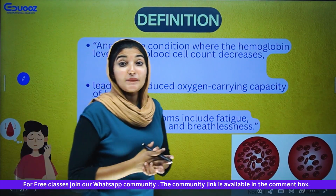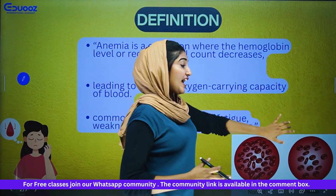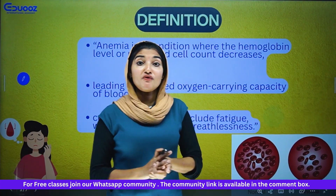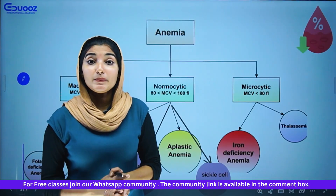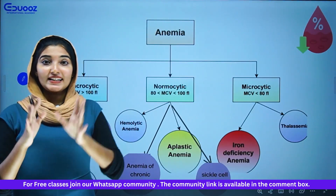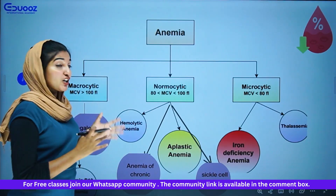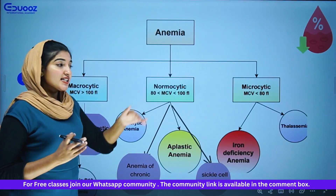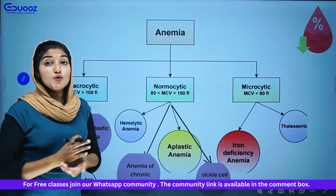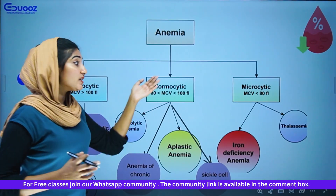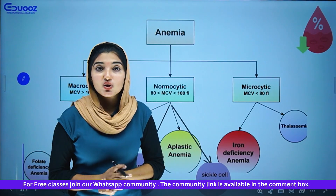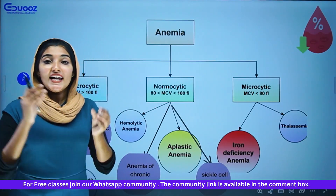Now let's go to the main topic. Anemia is classified. First, it is macrocytic. Second, it is normocytic. Third, it is microcytic. We classify by the size of the RBC.